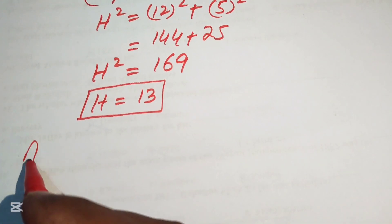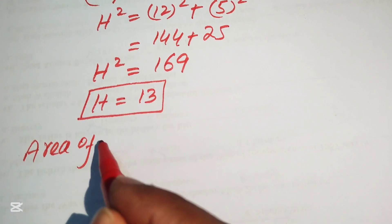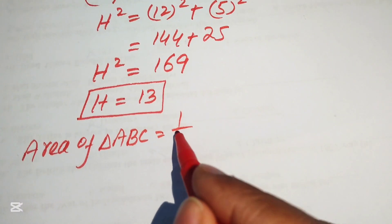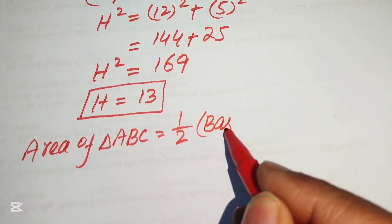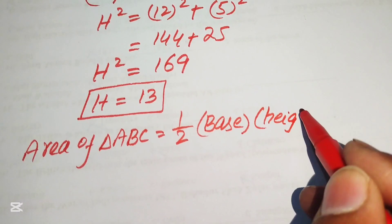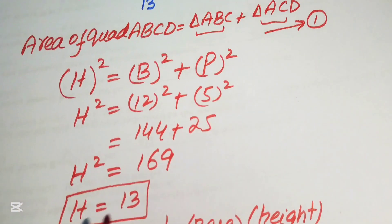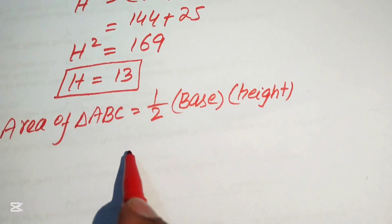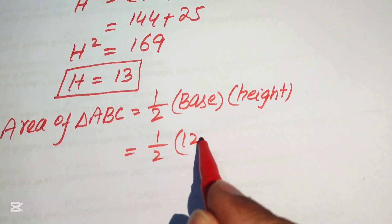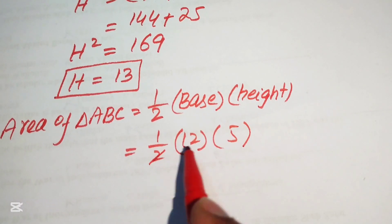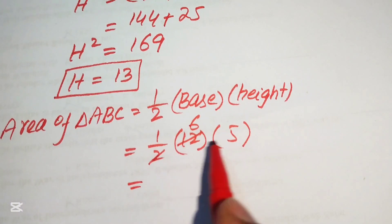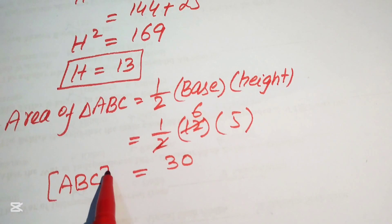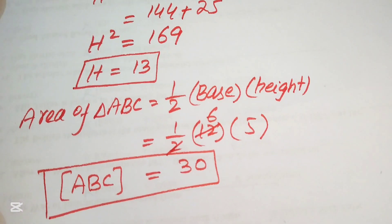Now we find the area of triangle ABC. The formula for the area of a triangle is ½ × base × height. In right triangle ABC, the base is 12 and the height is 5. So the area of triangle ABC = ½ × 12 × 5 = 30.